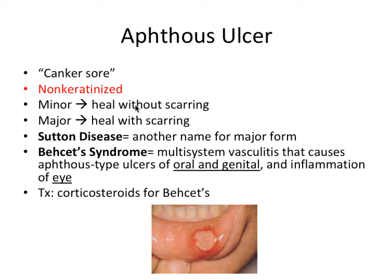The most common immunologic mucosal condition is aphthous ulcers, also referred to as canker sores. Aphthous ulcers 99% of the time affect non-keratinized tissue — all the lining mucosa like labial mucosa, buccal mucosa, alveolar mucosa, floor of the mouth, soft palate, and ventral surface of the tongue — basically all the unattached areas. In this picture we see a pretty sizable aphthous ulcer on the labial mucosa of the lower lip.